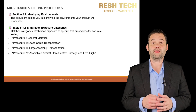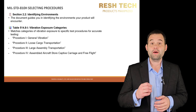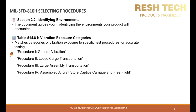In Section 2.2, the document guides you on identifying the environments that your system may encounter. Table 514.8-1 matches a category of vibration exposure to a test procedure. You have Procedure 1, general vibration; Procedure 2, loose cargo transportation; Procedure 3, large assembly transportation; and Procedure 4, assembled aircraft store, captive carriage, and free flight. If your product is secured cargo, you'll typically choose Procedure 1. If it is loose cargo, that's Procedure 2. For large assemblies, go for Procedure 3. And Procedure 4 is for aircraft stores and flights or missiles. Each covers different requirements and test configurations.